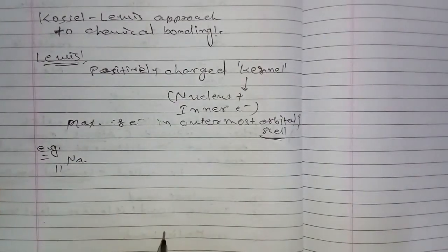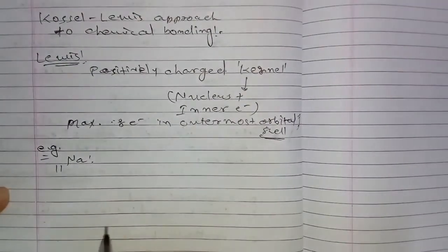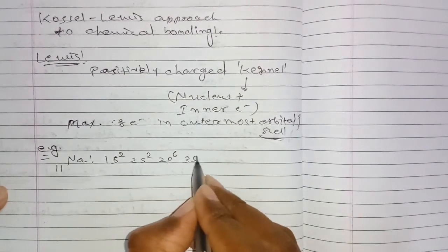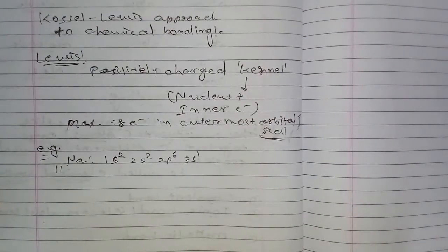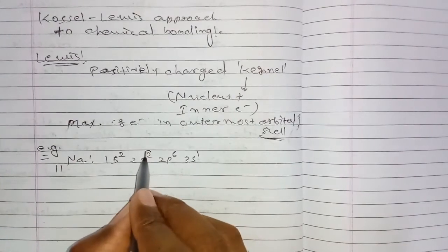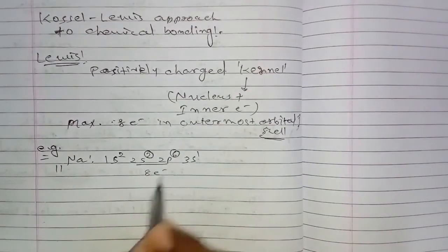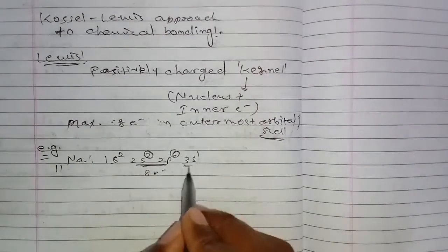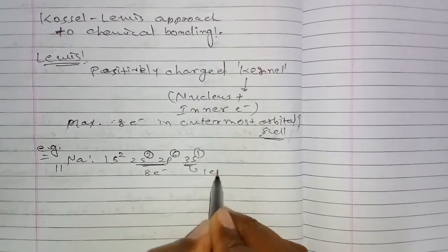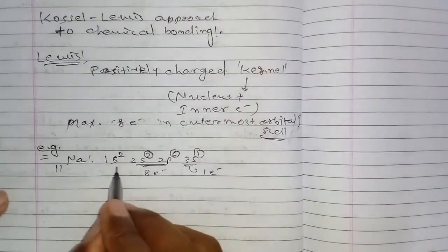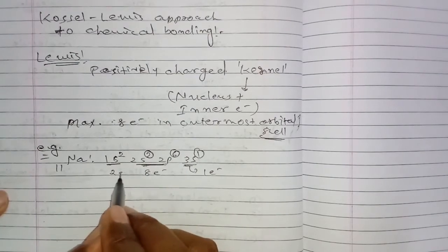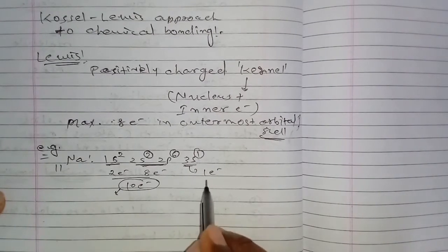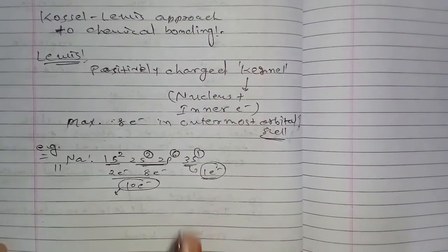For example, sodium has atomic number 11. Its electronic configuration is 1s² 2s² 2p⁶ 3s¹. In the inner shell there are 8 electrons, and in the outermost shell there is one electron. In the first shell there are two electrons. The total 10 electrons are in the inner shell, and the outermost shell has only one electron.